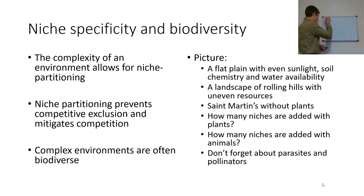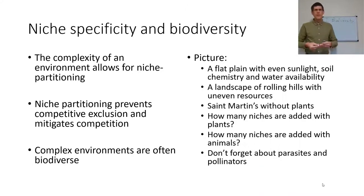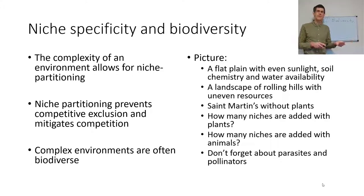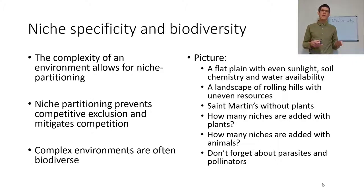On niche specificity: we're dealing with issues of biodiversity and relating that back to niches. In a more complex environment, more resources are available, so you get more niche partitioning. Each species occupies a realized niche, which allows it to partition out and have a more biodiverse community. If you have just one size of seed, you only get one type of seed-eating beetle. But with multiple seed sizes, you have seed-eating beetles, ants, birds, and mice. This niche partitioning prevents competitive exclusion because each organism occupies its own realized niche, which mitigates competition. That's why a more complex environment is more biodiverse.